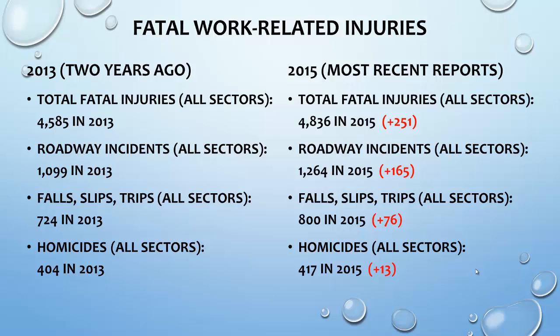The next thing is I want to show you a side-by-side comparison. In the original Lecture 11 video, I believe I expressed the 2013 data, so I wanted to update it. Whenever you see red, that is an indication there's been an increase. This is fatal — deaths at work. The total number of fatalities have gone up by 250 from 2013 to 2015. When we look at the rates, it's fairly even, but 251 more people died between 2013 and 2015.